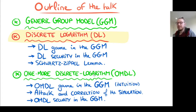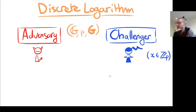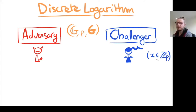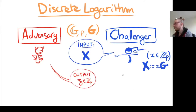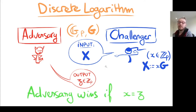Let's see how we can prove the security of the discrete logarithm in the generic group model. The discrete logarithm game has the challenger holding a secret scalar x, and the aim of the adversary is to guess the secret. The challenger builds a challenge, which is the group element X = x·g, shown as input to the adversary, and the adversary outputs some scalar z. The adversary wins if x equals z.